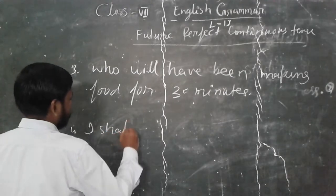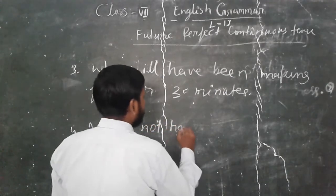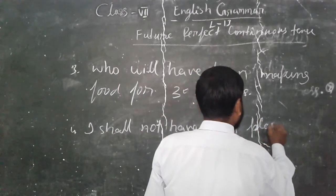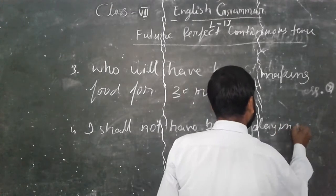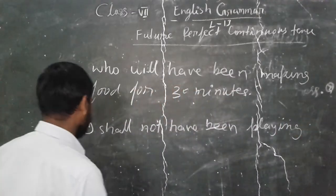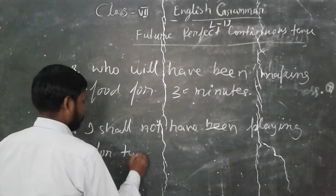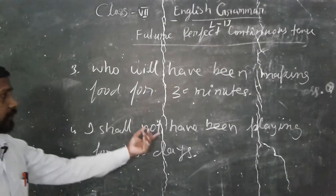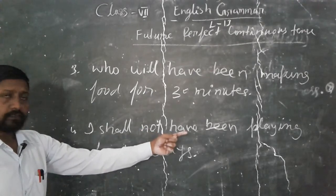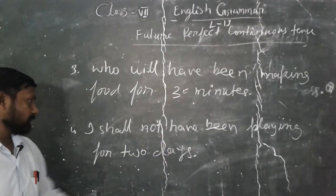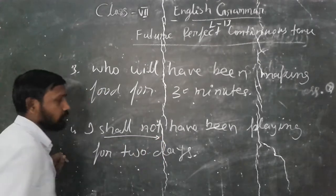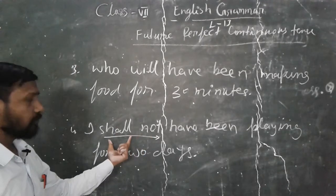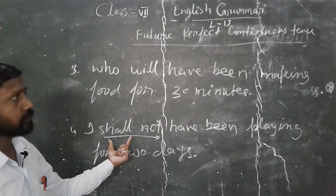Let's see the next example: 'I shall not have been laying for 2 days.' After 'shall', we use 'not'. If you have to use 'not', remember one thing — 'not' will always be used after the first helping verb.